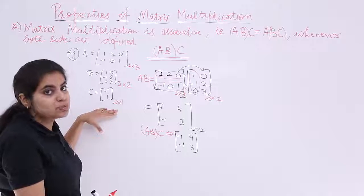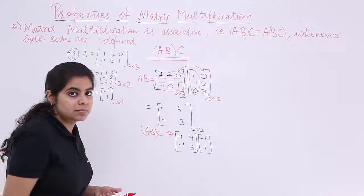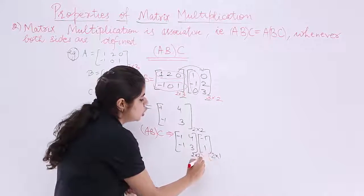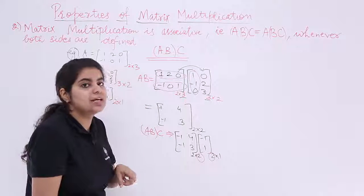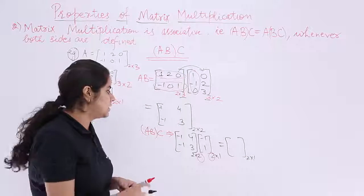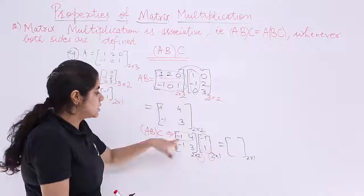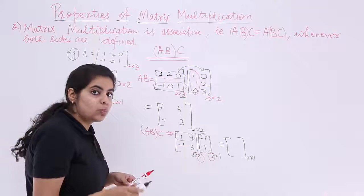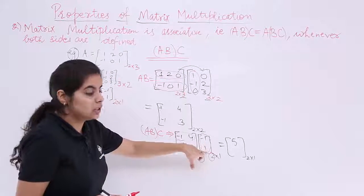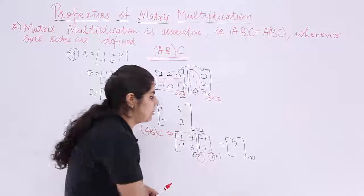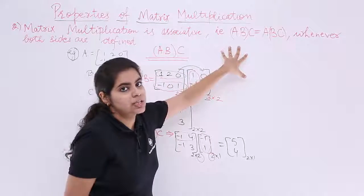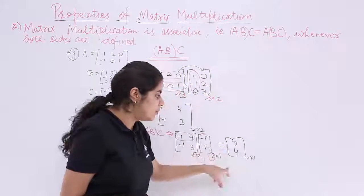Now multiply AB by C. AB = [[−1, 4], [−1, 3]] is 2×2, and C = [−1, 1] is 2×1. Since 2 = 2, multiplication is possible and the result is a 2×1 matrix. First row: (−1)×(−1) + 4×1 = 1 + 4 = 5. Second row: (−1)×(−1) + 3×1 = 1 + 3 = 4. So (AB)C = [5, 4], which is our LHS result.